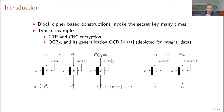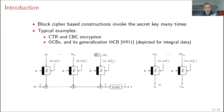You have associated data and a message checksum that get processed to obtain the tag, and the messages get encrypted independently to get the ciphertext. What's important is that the same key is used for every tweakable block cipher evaluation.